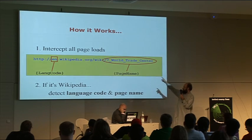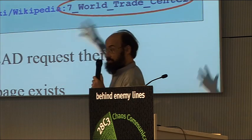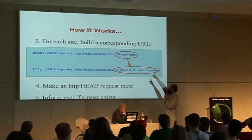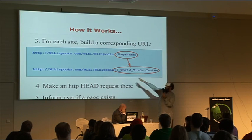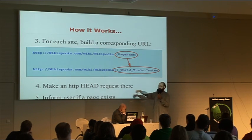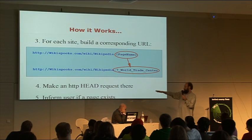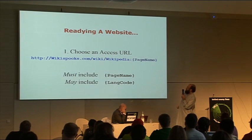It intercepts the page loads and says, 'That's the language and that's the page name. Is there an English language site that you've said you're interested in that references this page name?' It can only go to a site that's ready to receive it, because you specify 'this is my access URL, it's a template.' He was on the 7 World Trade Center page, so if that's got a page it will look like this. It just sends out a HEAD request — 'Have you got a page?' — checks the code, if it's a 404, don't bother. If there is a page that matches, it says 'Oh, by the way, here's a page that matches that you might be interested in.'